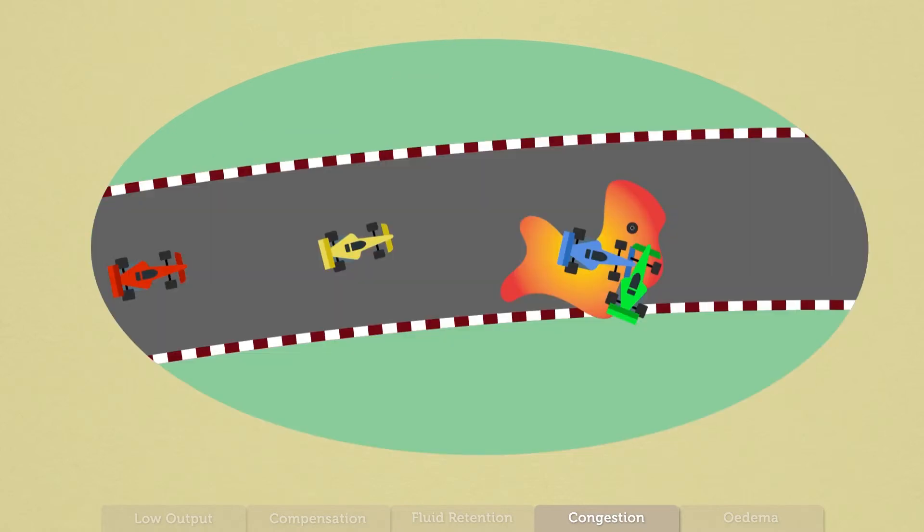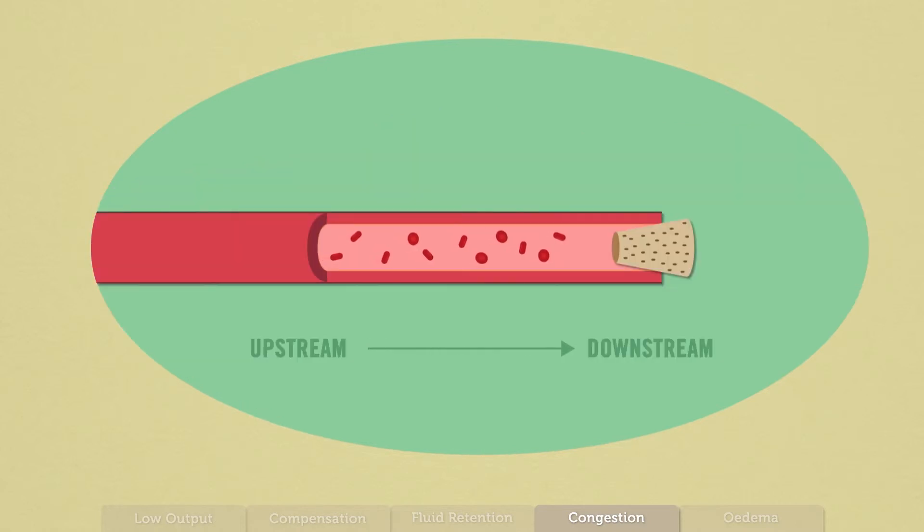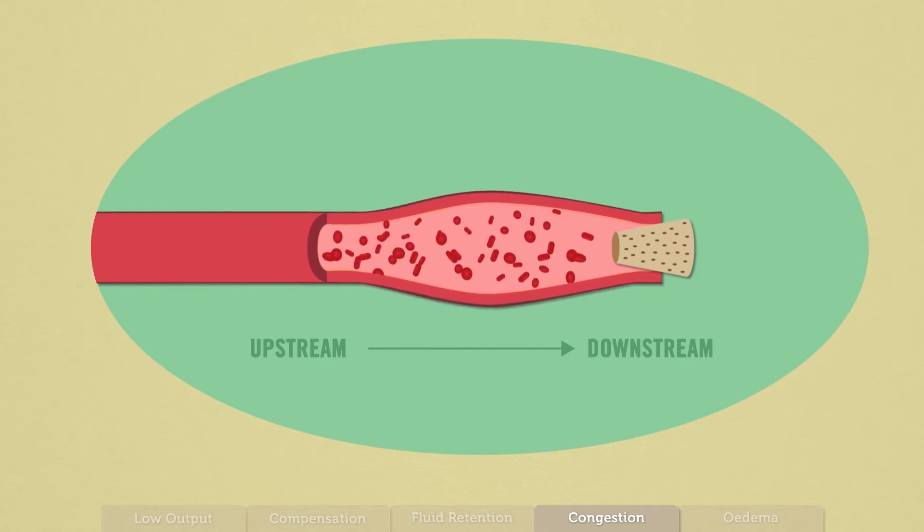Just like roadway congestion, where more cars enter a roadway than can leave, causing a traffic jam, in heart failure, congestion is usually caused by a blockage of blood vessels downstream. The result is that the upstream congestion area becomes pressurized and may overflow. So you are saying there is a blockage, and the effects of the blockage are different depending on whether you are upstream or downstream of the blockage. Just like a dam or roadway congestion.